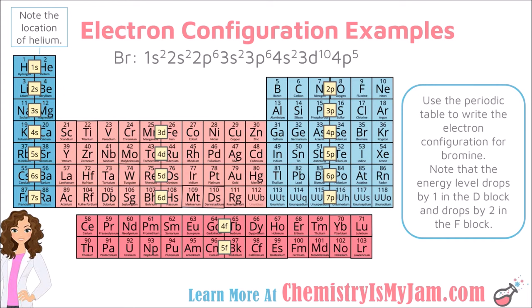This color-coded and labeled periodic table helps show one area where the pattern changes. Going in order: 1S, 2S, 2P, 3S, 3P — everything on the same row has the same energy level number. But when you get to the fourth row, you have 4S and then you would expect 4D; however, in the D block the energy level drops by 1, so it goes 4S, 3D. Leaving the D block it goes back to normal: 4P, 5S, 4D, 5P. Anytime you are in the D block, the energy level has been reduced by 1.